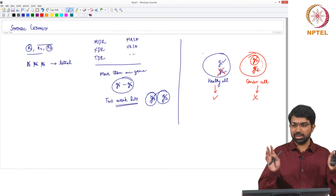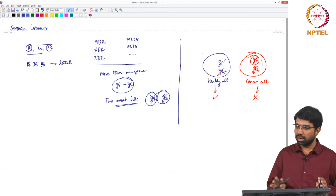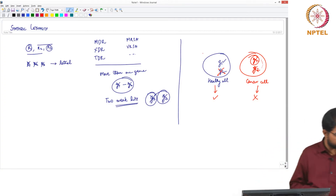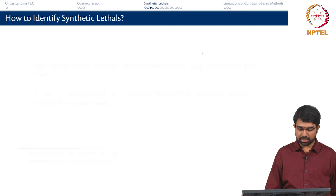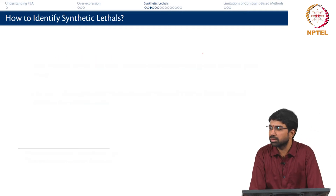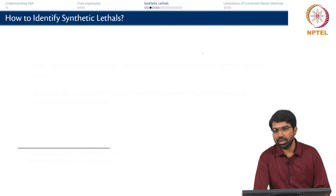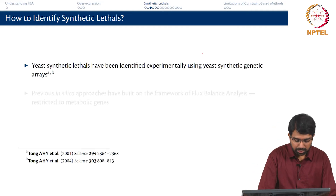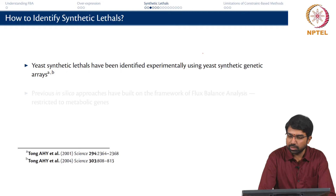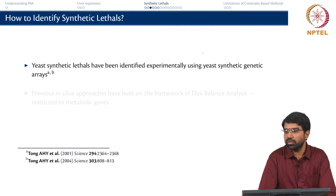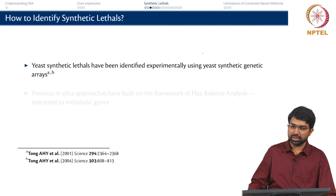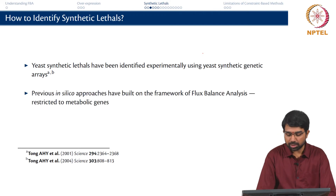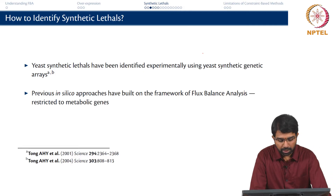Cancer therapy is another possible application for synthetic lethals. So how do you identify synthetic lethals? Let us first look at experimental methods before computational methods. Yeast synthetic lethals have been identified using yeast synthetic genetic arrays — large high-throughput phenotypic screens where you remove multiple genes at a time and check the phenotype. Previous in silico approaches have also built on the framework of FBA, but of course this is restricted to metabolic genes.